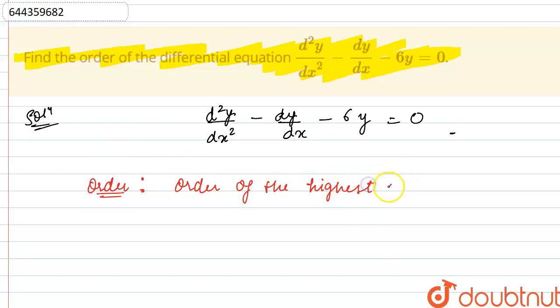Now the order of a derivative is like: if we have a derivative d^n y divided by dx^n, so this n is known as the order of this derivative.